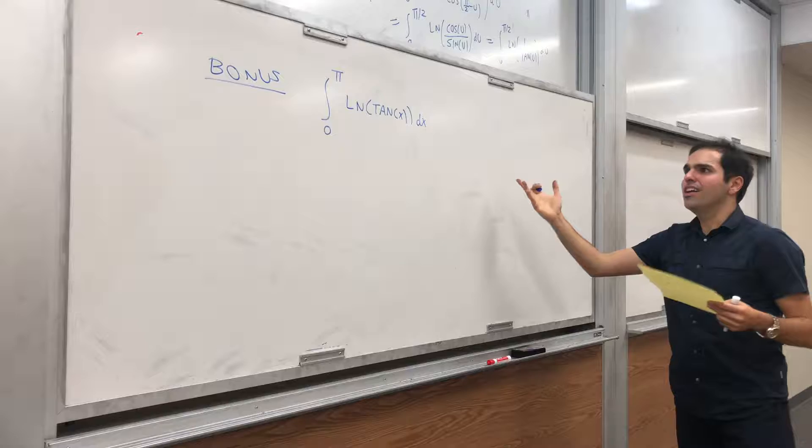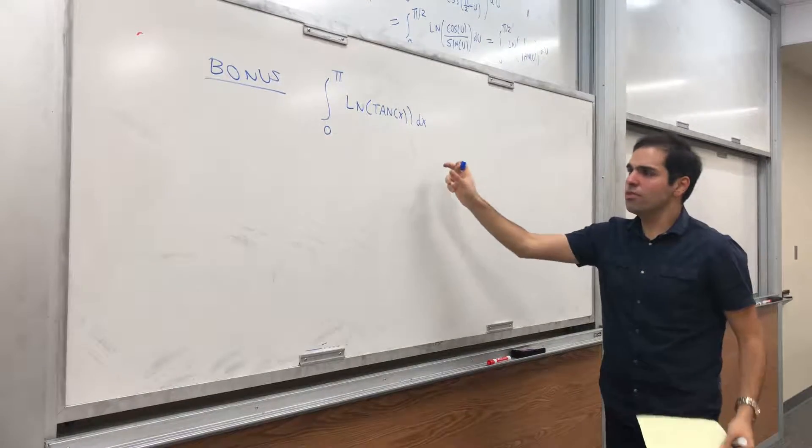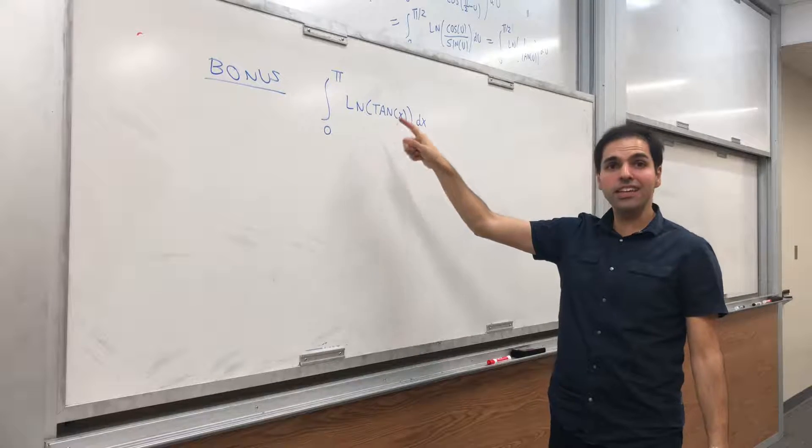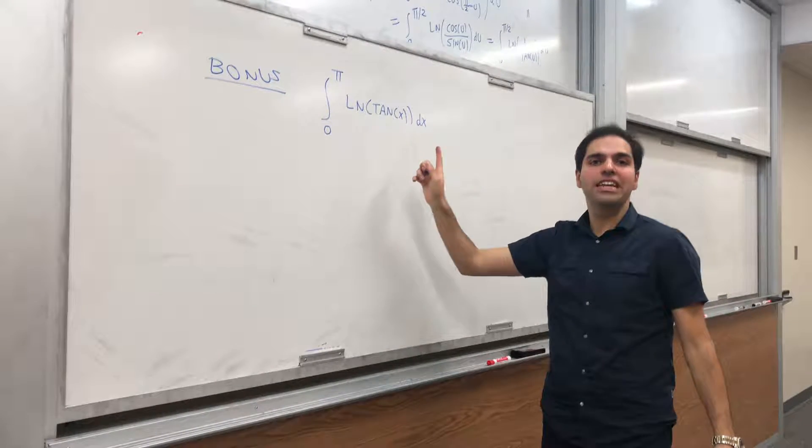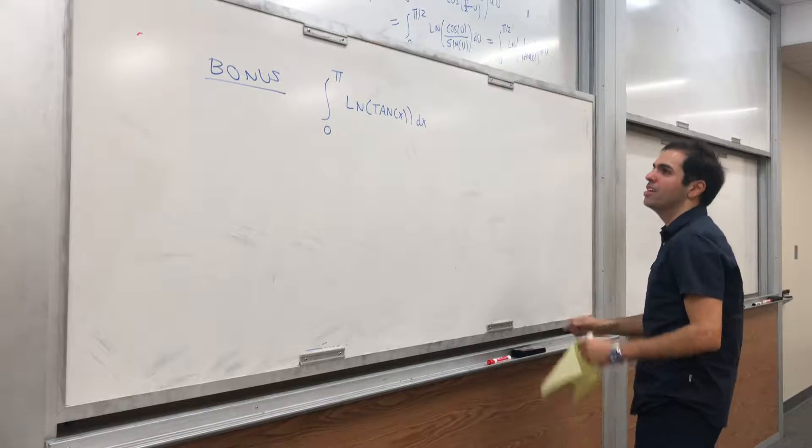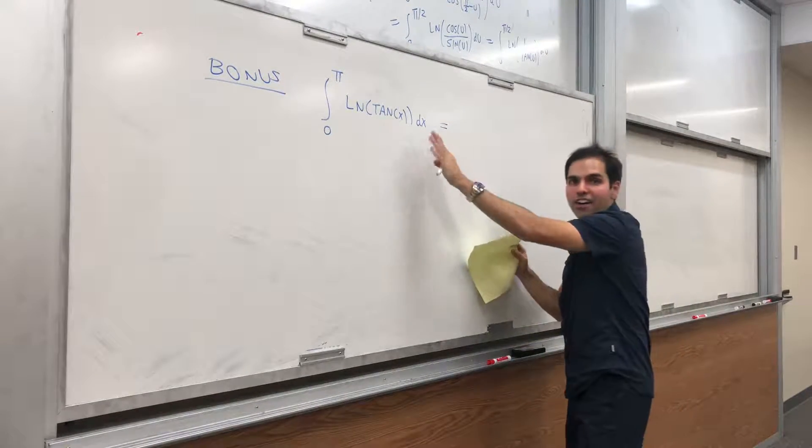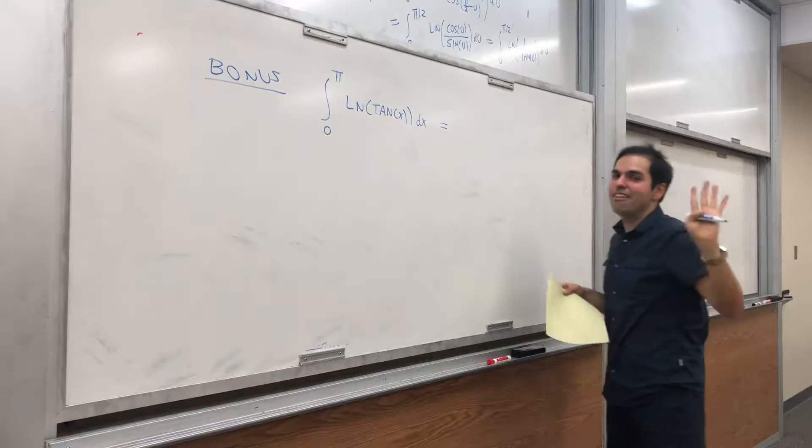And be careful, right? Tangent from π over 2 to π, it's negative. So technically, we will actually get ln of a negative number, which will be complex value. So in terms of if you're taking single variable calculus, don't look at that. That's very bad.